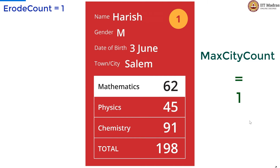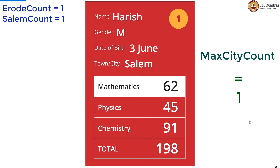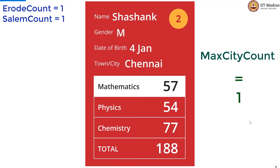Going card by card, Salem we are encountering for the first time. So we declare a new variable called Salem count, initialize it to 0, and then increment it by 1. Now Chennai again we are seeing for the first time, so new variable Chennai count, initialize to 0, increment by 1. So far max city count has been 1 only, because all cities we have seen have had only 1 student each so far.